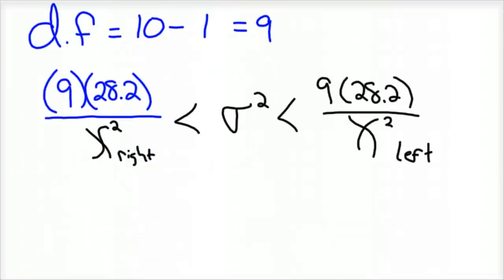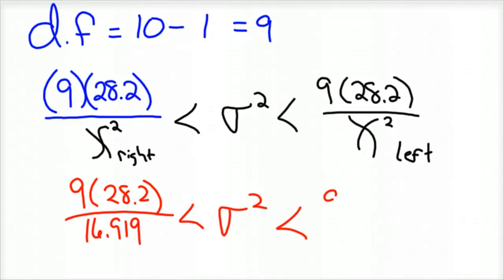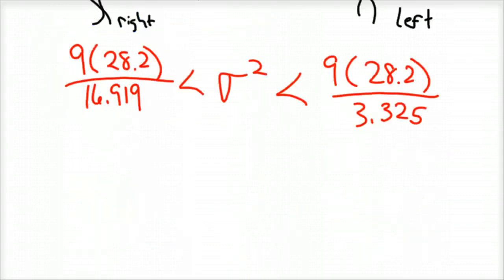So let's go ahead and plug those into our formula. So we've got 9 times 28.2 divided by 16.919 from our table. And now you can get your calculator out and you crunch the numbers, and you find out that 15.0 is less than sigma squared is less than 76.3. And so that's the variance.